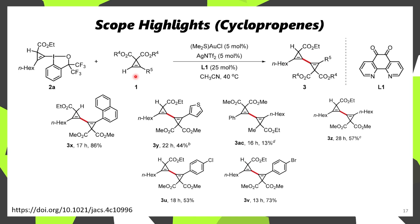In the scope highlights shown here, various different cyclopropene derivatives were used. There's an example where a naphthalene was present, and in another case there's a thiophene. Aliphatic derivatives were also tolerated, but when one of the esters was replaced with a methyl group, very low conversion was observed. Despite that, aryl halides were also tolerated, demonstrating that a wide range of bis-cyclopropene products could be formed.